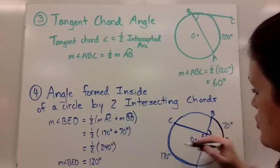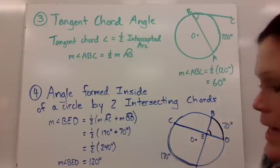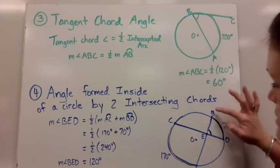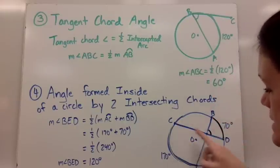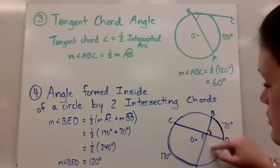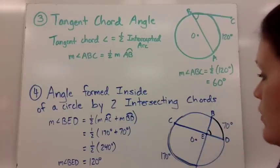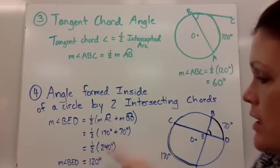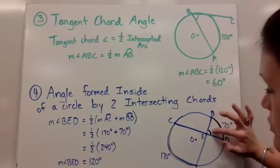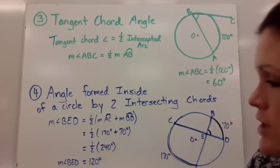we have to figure it out by taking half of the measure of the two intercepted arcs this time. So we add together the two intercepted arcs. And then we take half of that measure to get that angle. And notice BED and CEA are vertical angles. So then we could figure out the rest of the angles here if we needed to. So half of 170 plus 70 was half of 240. And so the measure of the angle that we were looking for, which was BED, is just 120.